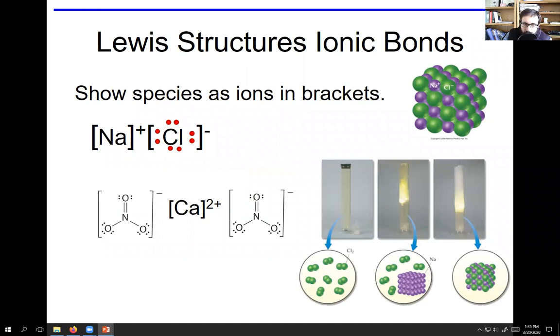You can write Lewis structures for ionic bonds too. It's pretty simple. We've mentioned like sodium chloride. You're going to put the ions in brackets, and then you're going to put electrons around the atoms.